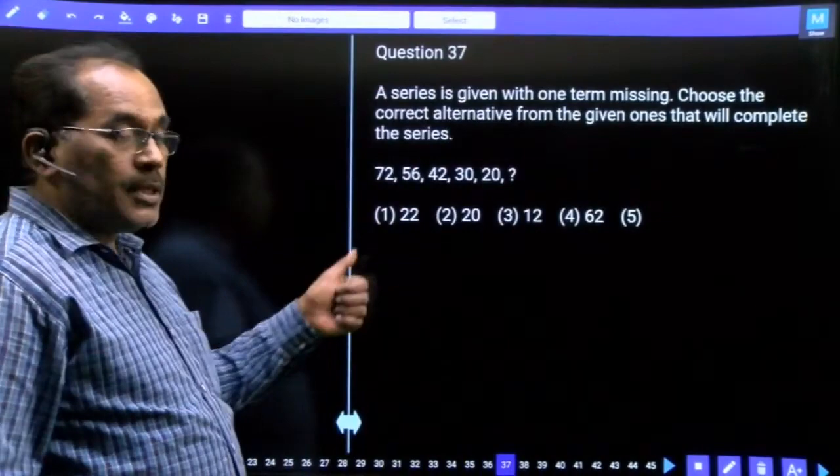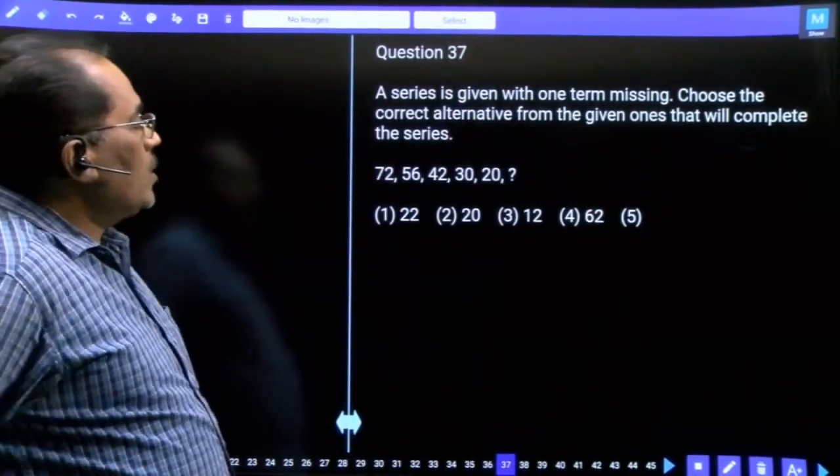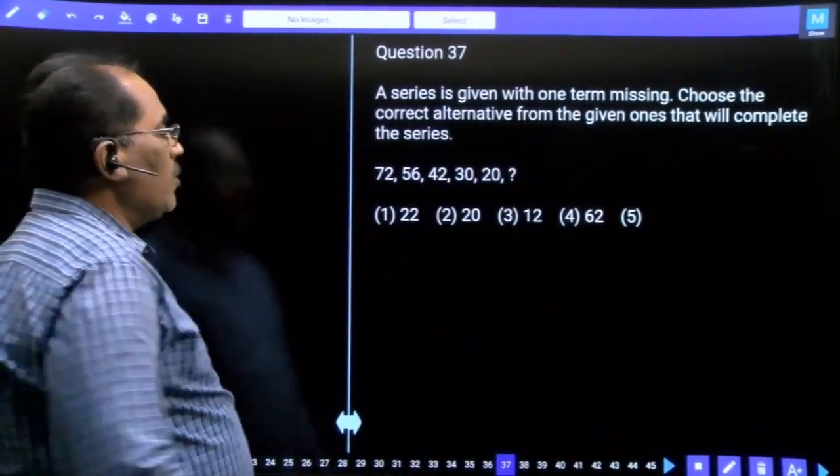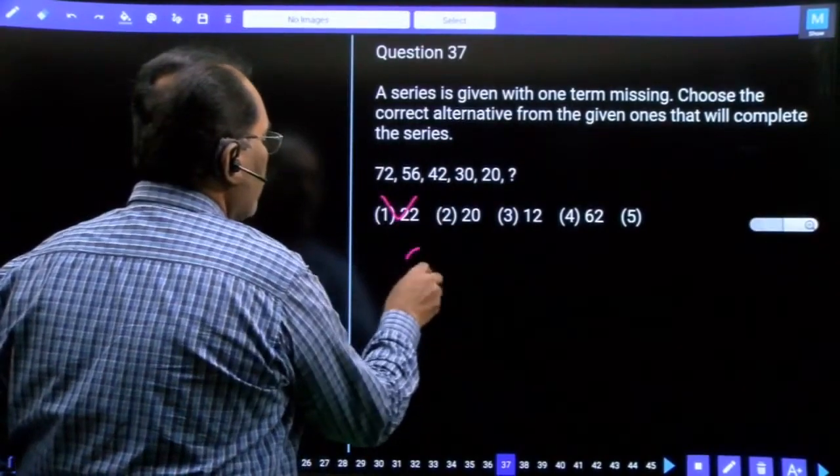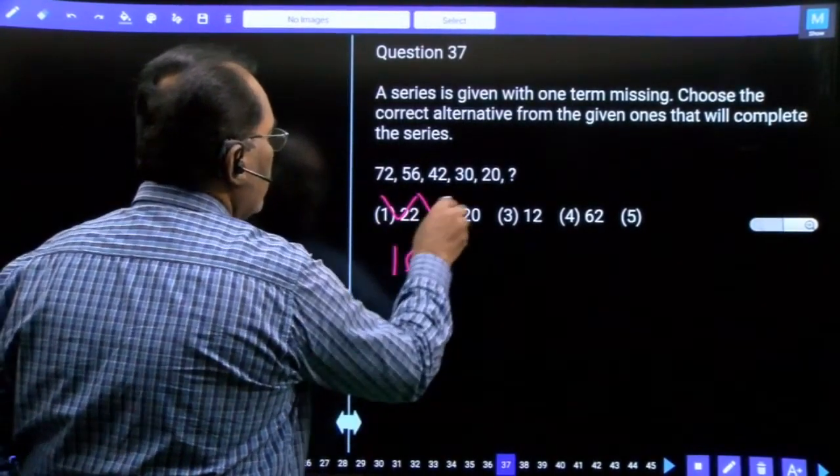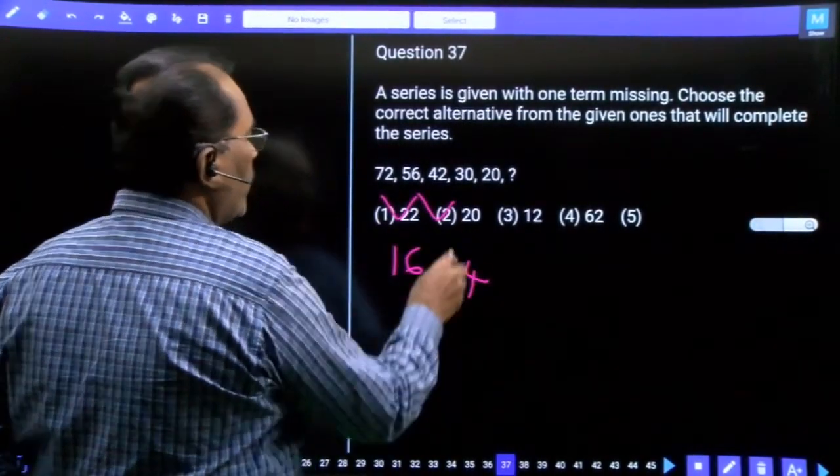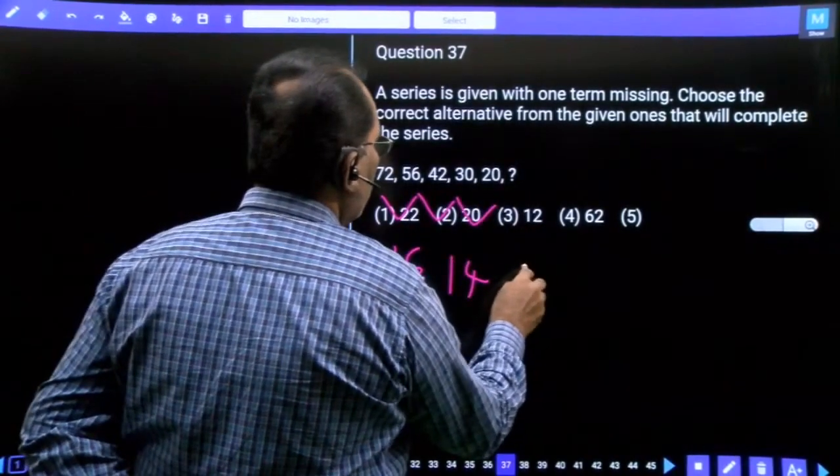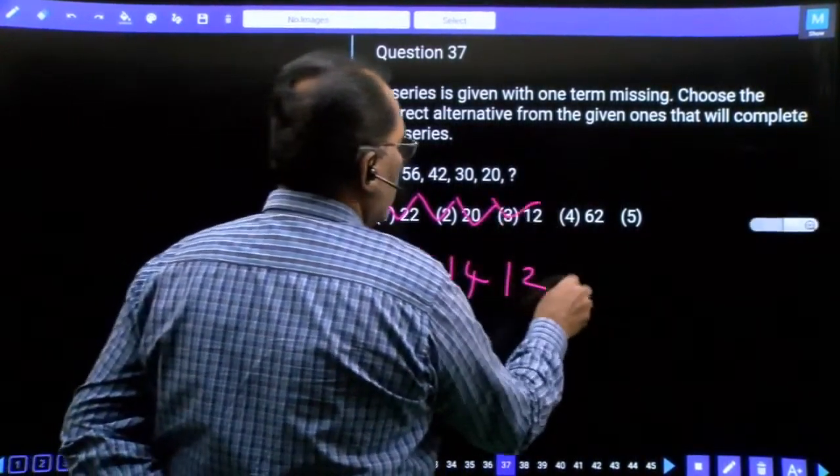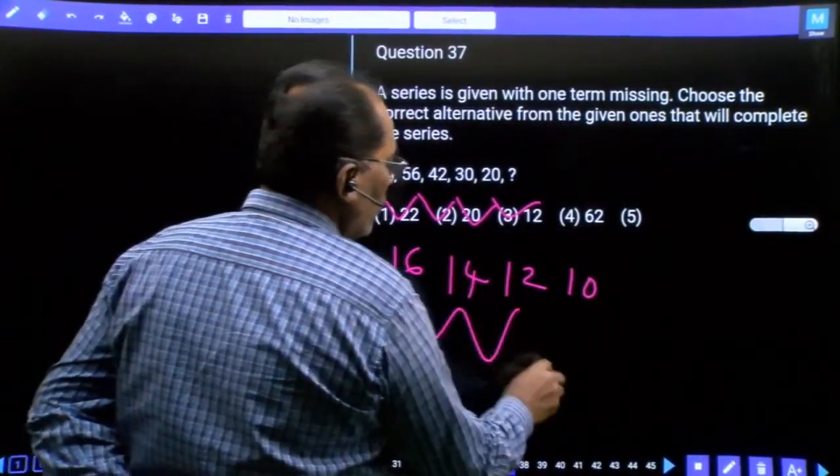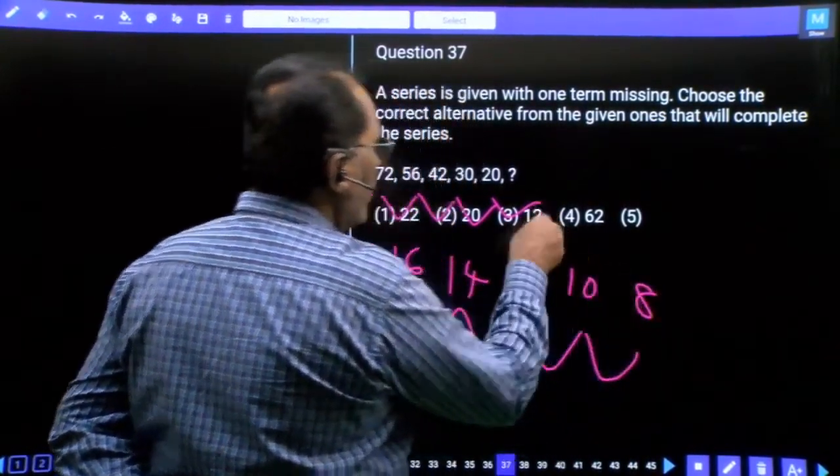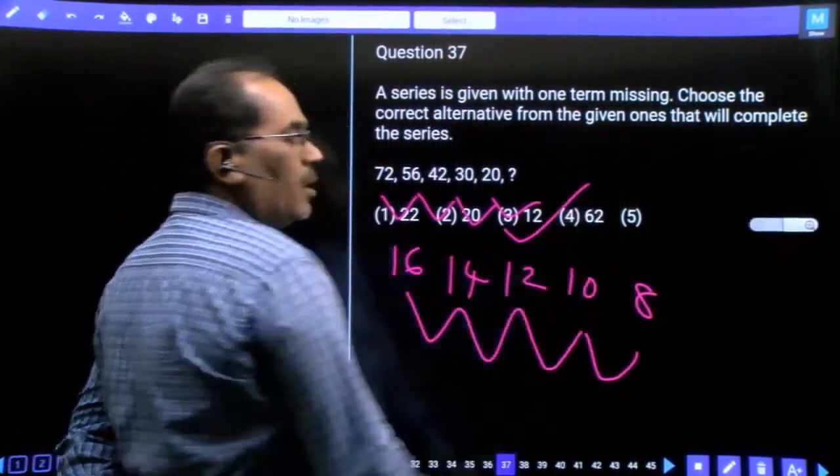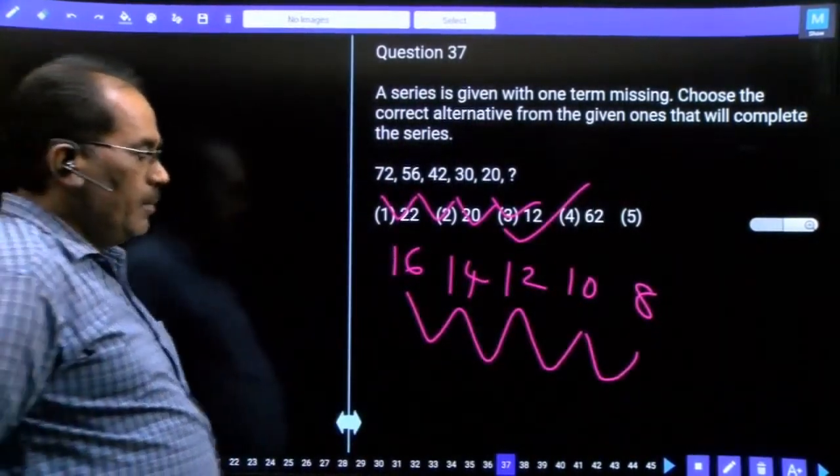Question 37, this is a number series. 72, 56, 42, 30, 20. The differences are 16, 14, 12, 10. Following the pattern, the next difference is 8. 20 minus 8 equals 12, our answer is third option.